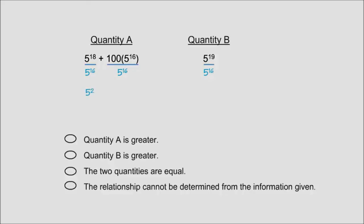The next term, the 5 to the 16th, just cancels out, leaving us with 100. And the final term, 19 minus 16 is 3, so that's 5 cubed. And hey, this is math I can do in my head.